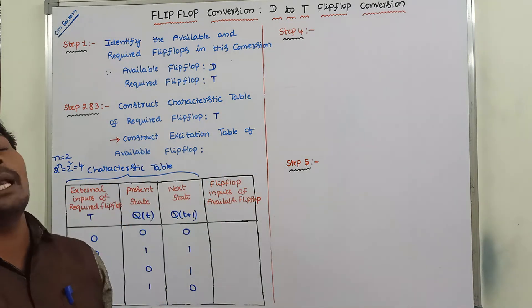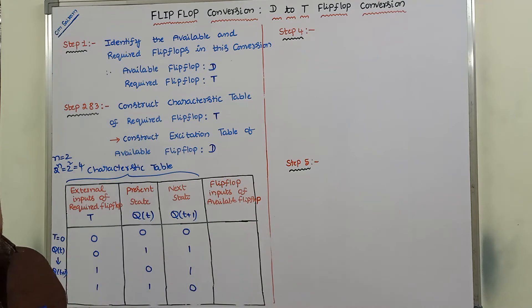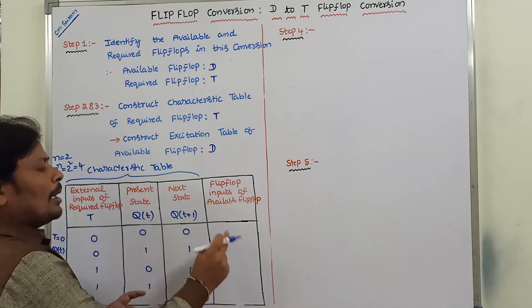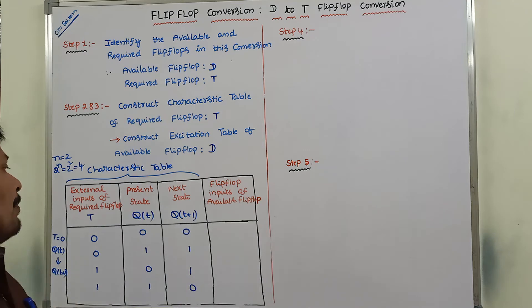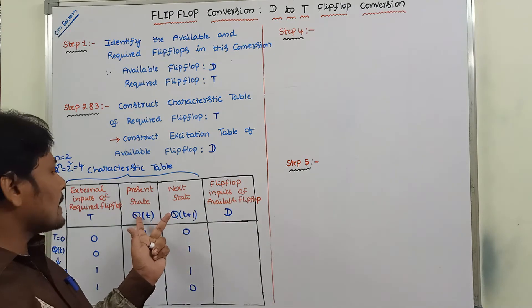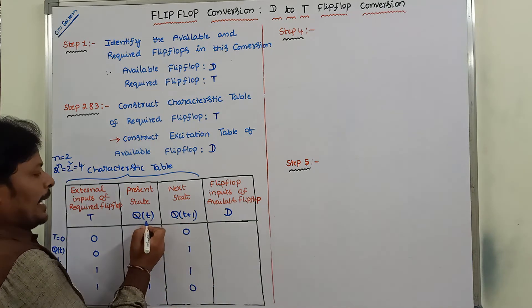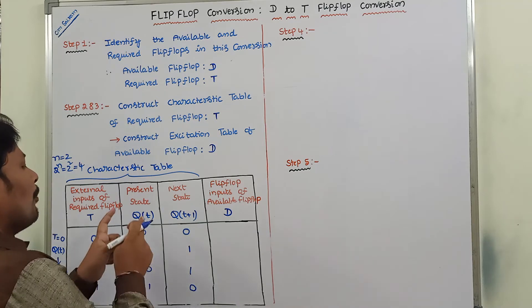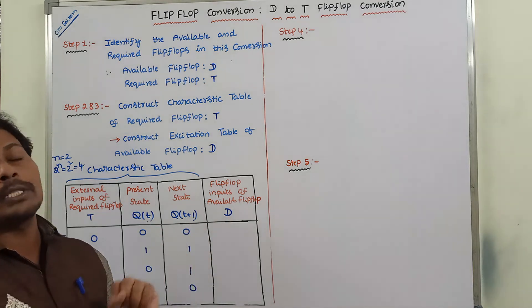The third step is to construct the excitation table of the available flip-flop. Here the available flip-flop is D flip-flop, and we have to construct the excitation table for it. The last three columns — Q(t), Q(t+1), and D — represent the excitation table of the available flip-flop, that is D flip-flop. Both Q(t) and Q(t+1) values are considered as input columns for finding out D.